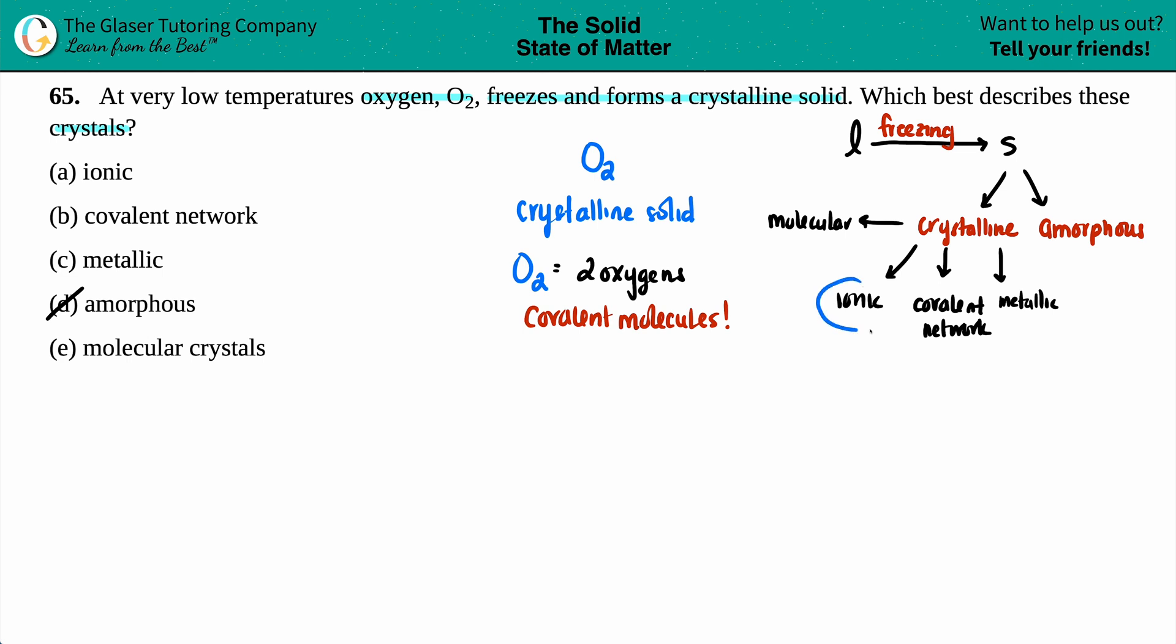So that eliminates some of the choices of crystalline solids. Just know that an ionic, remember ionic compound going all the way back, back in Gen Chem 1, ionic needs to have a metal. So the ionic one needs to have a metal and a nonmetal. So ionic is out because there's no metal here.